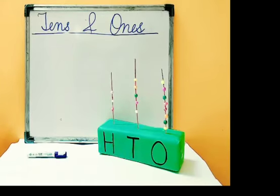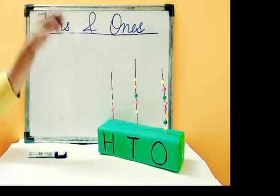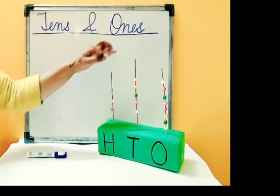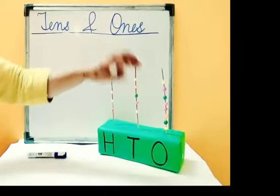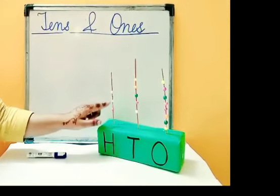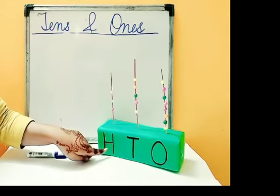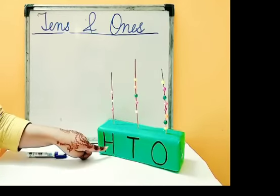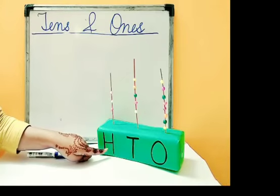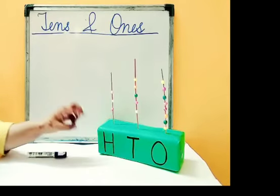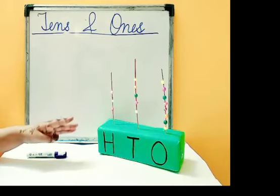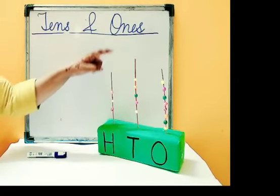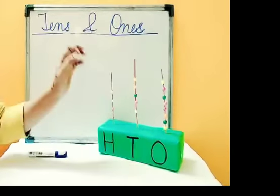In a three spike abacus, how many spikes? One, two, three. Also, we have three digits number at hundred digits number. In a hundred digits number, we have three digits number, three numbers. That's why here I present you a three spikes.